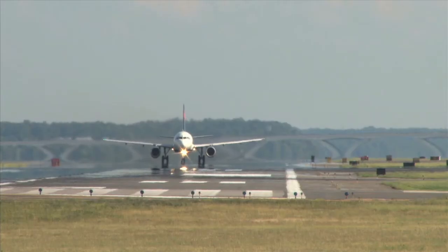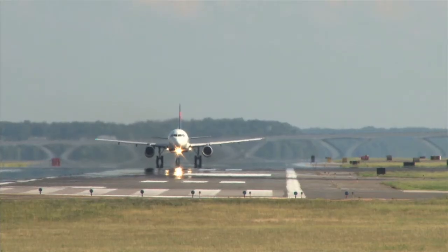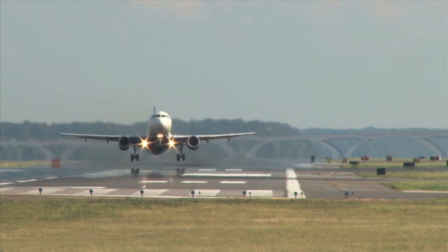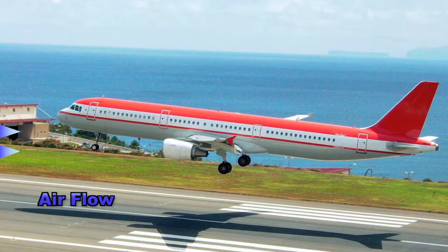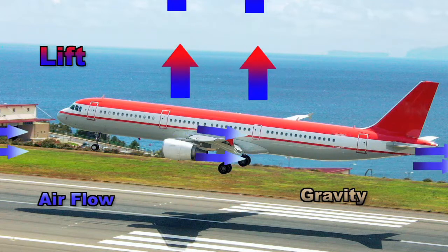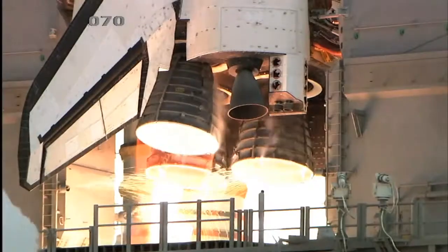At takeoff, powerful jet engines propel the airplanes forward at very high speeds. The air flowing against the wings forces the aircraft upward, creating an upward opposing force called lift. Airplanes are unable to fly unless they reach a certain speed.